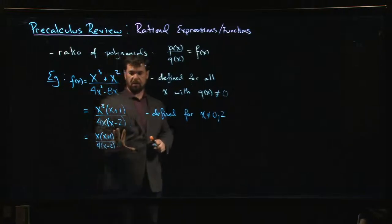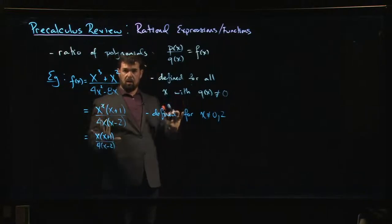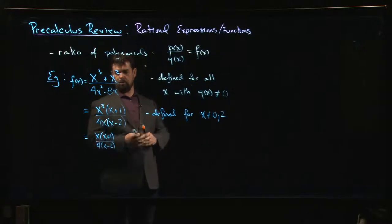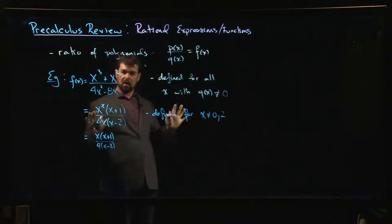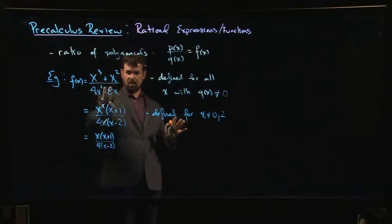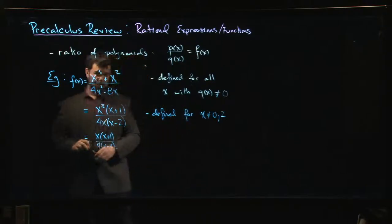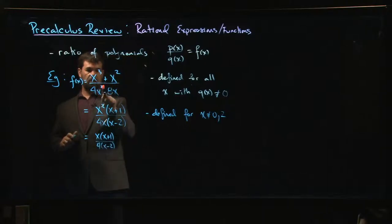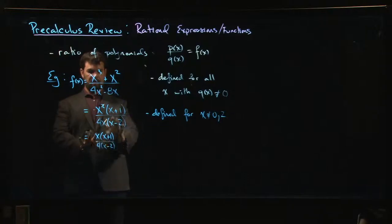Now I've simplified. One of the things you want to be very careful with when you're simplifying rational expressions is that you can only simplify once you've factored. Don't try to cancel things if you haven't factored top and bottom. It would not be valid for me to cancel an X squared here with an X squared down here. That doesn't work.